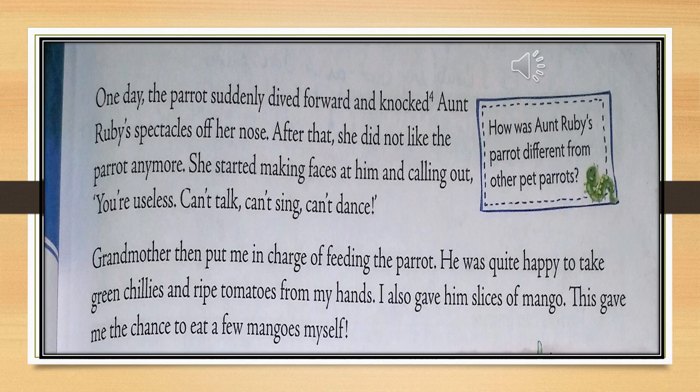When Aunt Ruby used to bring her face forward and ask him to 'kiss kiss,' one day the parrot was really angry. He came forward and knocked Aunt Ruby's spectacles off her nose and really hurt her. After that, she also started disliking the parrot. As soon as she used to see him, she used to make faces at him and say, 'You are useless. You can't talk. Can't sing. Can't dance. Good for nothing.'